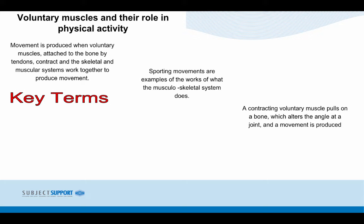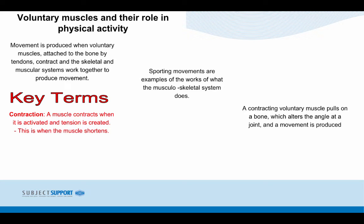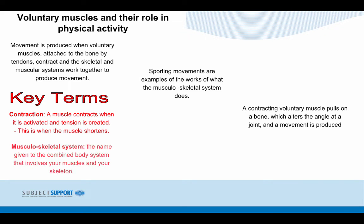Key terms. Contraction: a muscle contracts when it is active and tension is created — this is when the muscle shortens. Musculoskeletal system: the name given to the combined body system that involves your muscles and your skeleton.